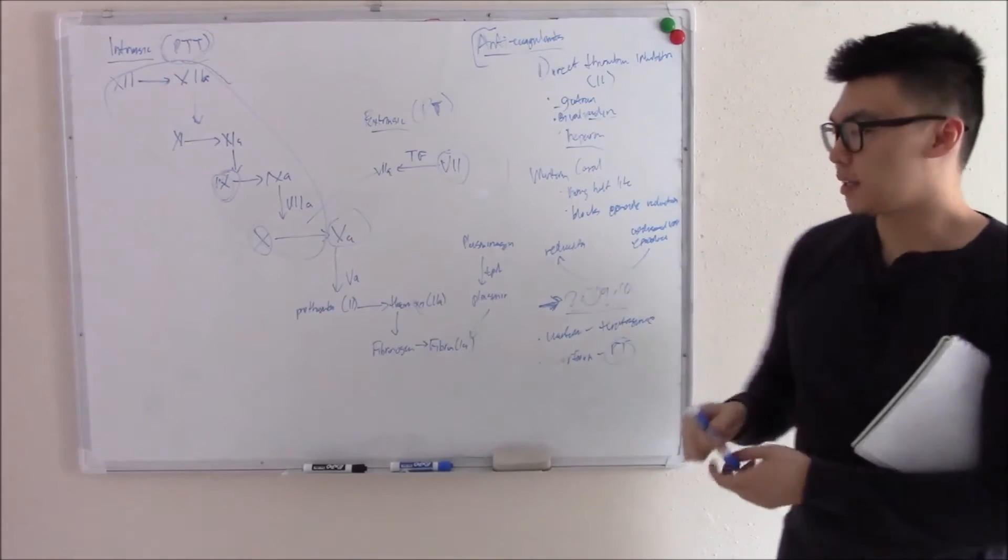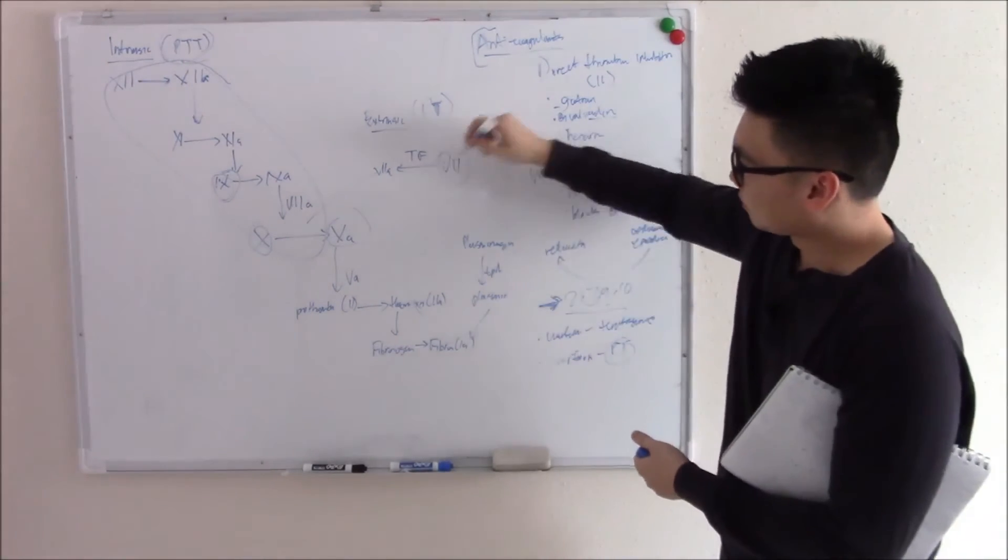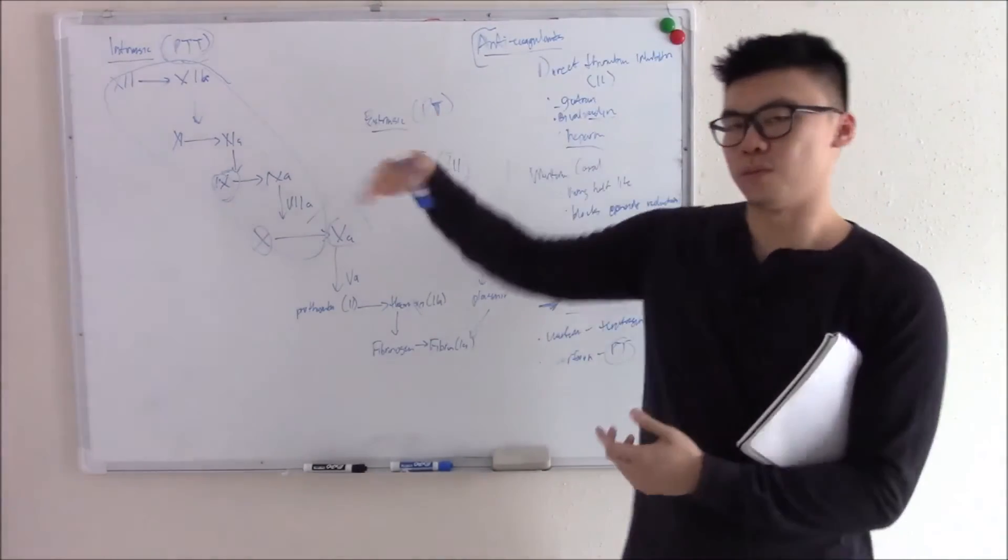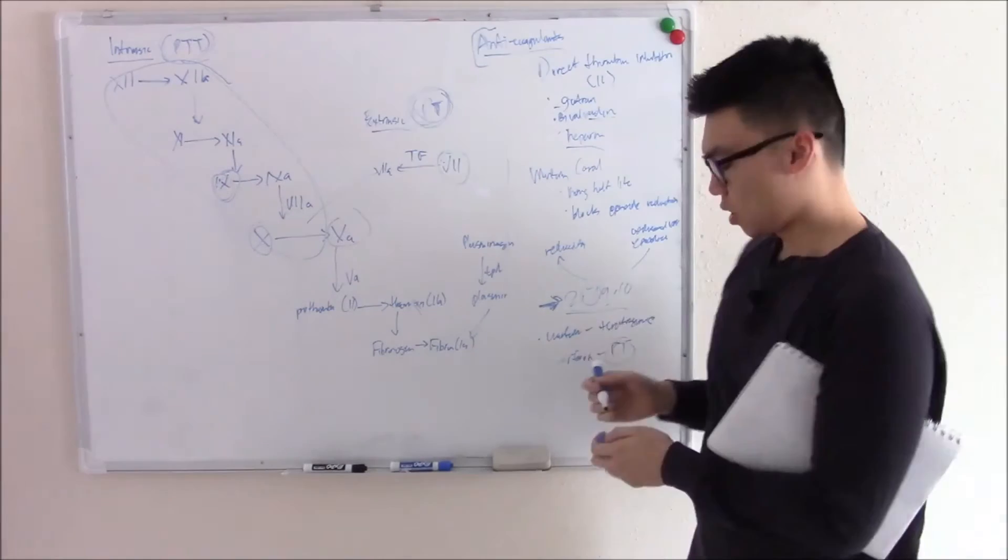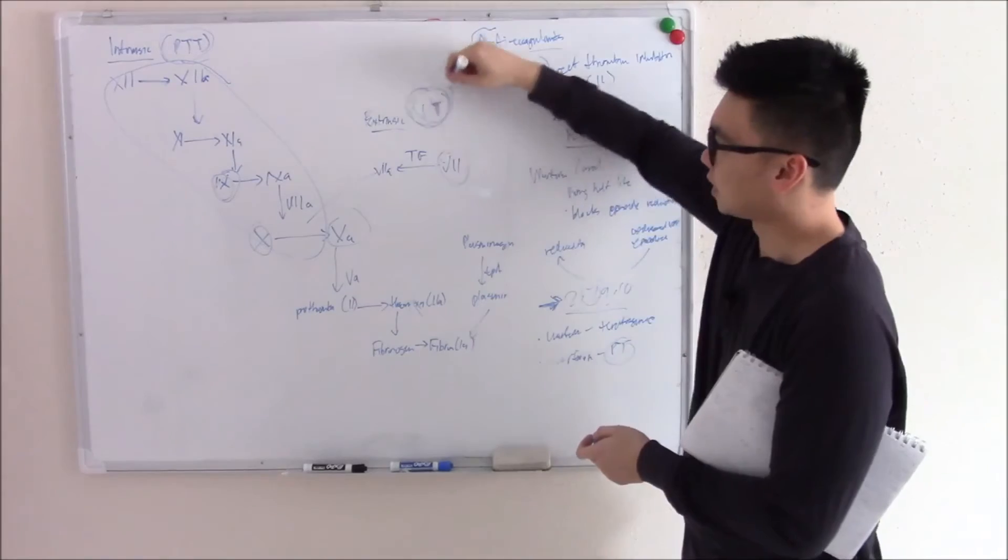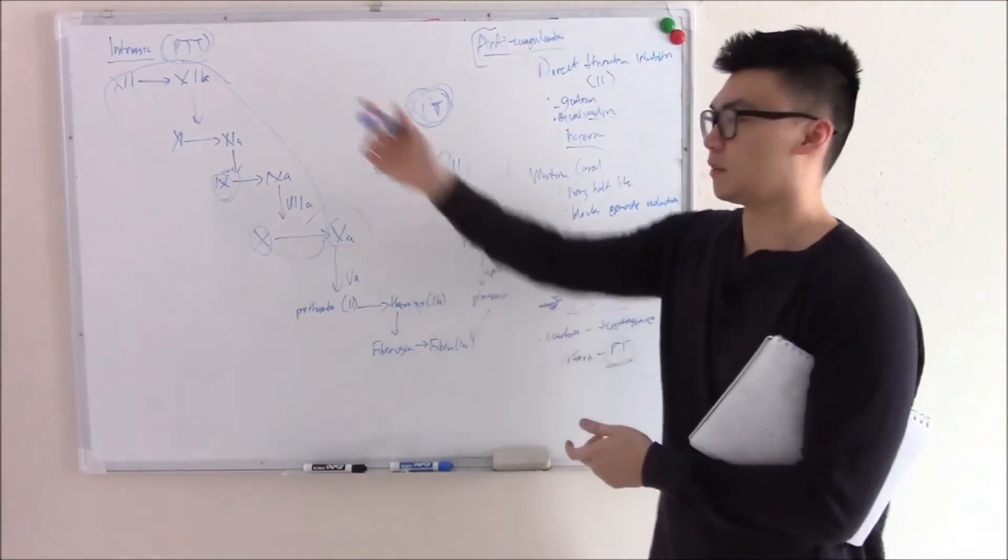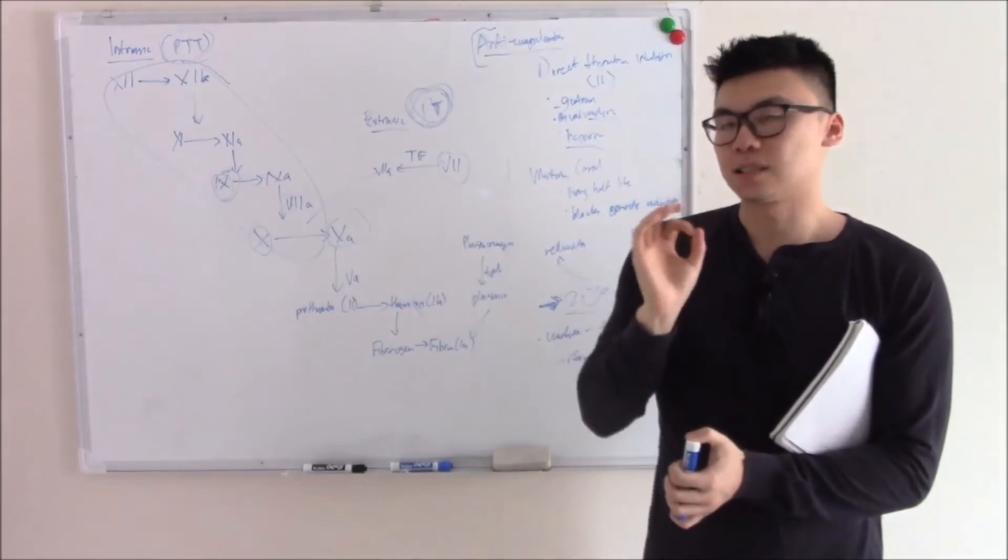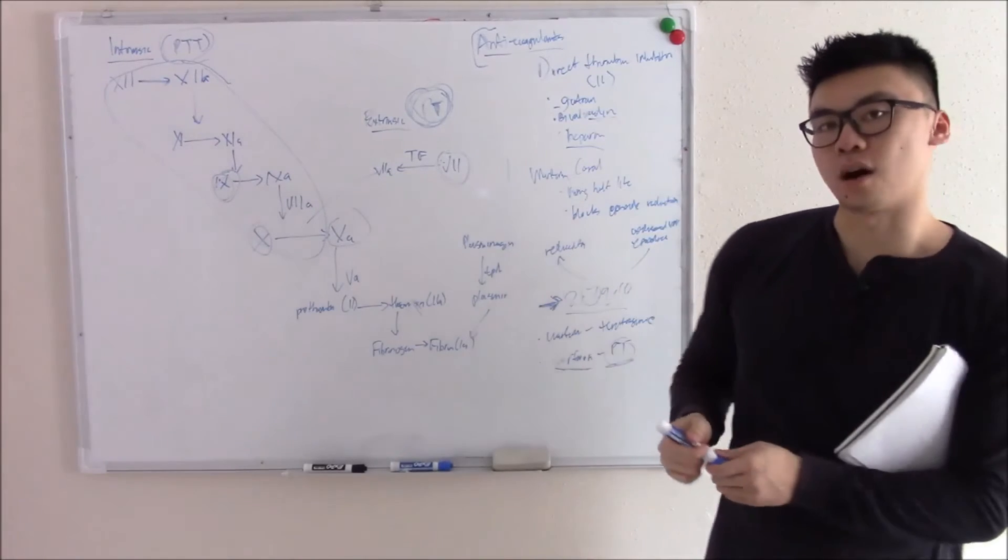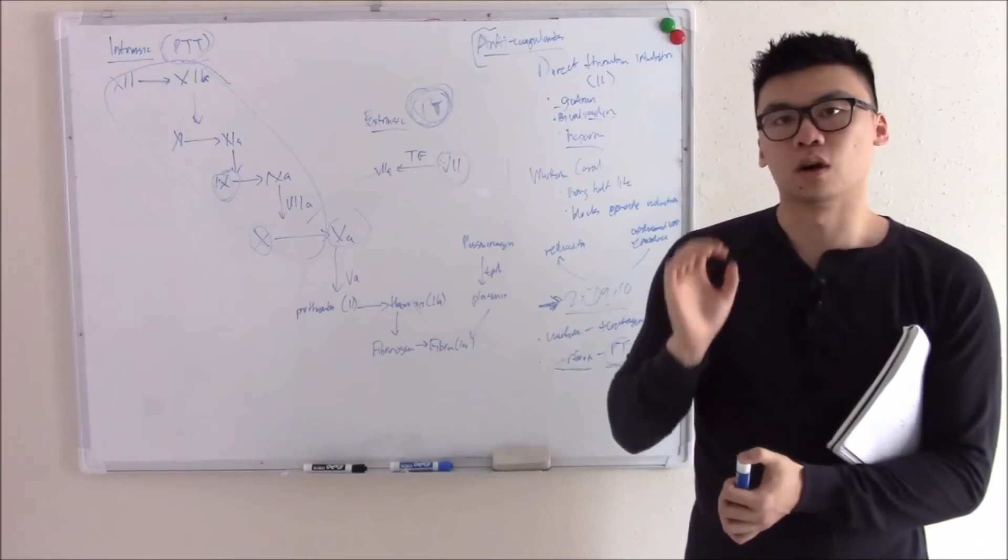So why do we use PT? Warfarin makes 2, 7, 9, and 10. Factor 7 is over here and 9 is over here. So it actually works on both pathways. Why do we use PT? Well we notice in therapeutic normal doses of warfarin it predominantly affects PT. That's why we use it here. And if you're at really really high doses it'll affect both. But for our intents and purposes warfarin mainly affects PT and that's how we monitor our warfarin use. Make sure we don't give too much. Make sure we don't overdose the patient.